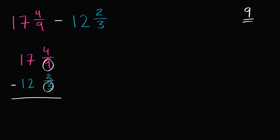So I can rewrite both of these fraction parts in terms of ninths. Now the one on top already is written in terms of ninths, so I can just rewrite that: 17 and 4/9. The one on the bottom I can write as 12 and some number of ninths. So 2/3 is how many ninths? Well, to go from thirds to ninths I had to multiply by 3, so the numerator I need to multiply by 3 as well. 2 times 3 is 6. 2/3 is the same thing as 6/9.